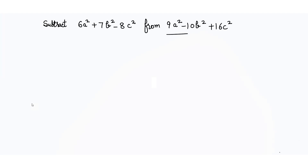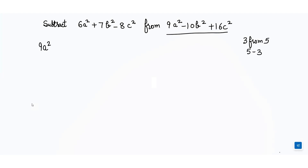We will write down the second term first, because it is like 'subtract 3 from 5' means 5 minus 3. So we write 9a² - 10b² + 16c² first, then minus, and within a bracket we write the first term: 6a².